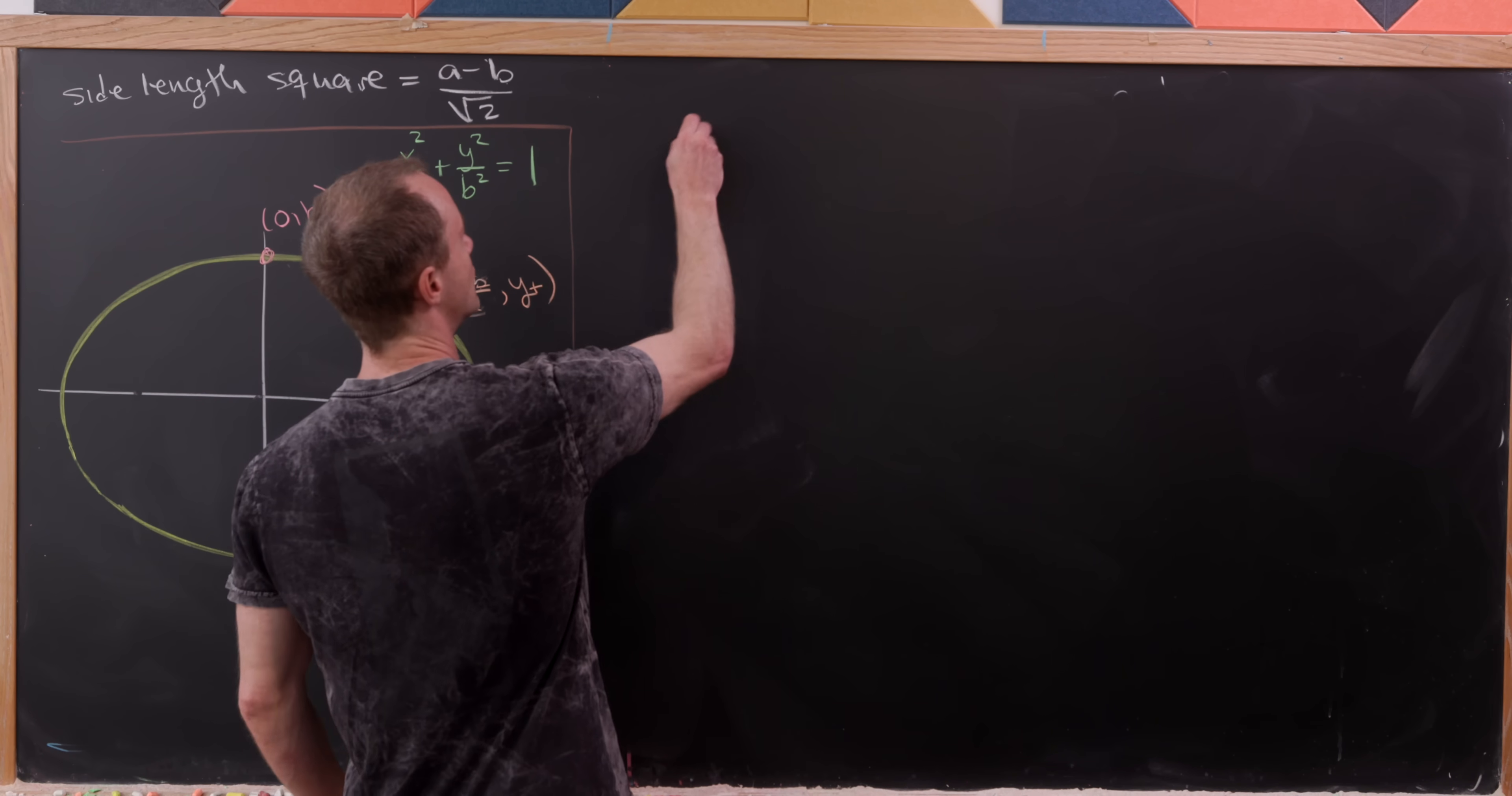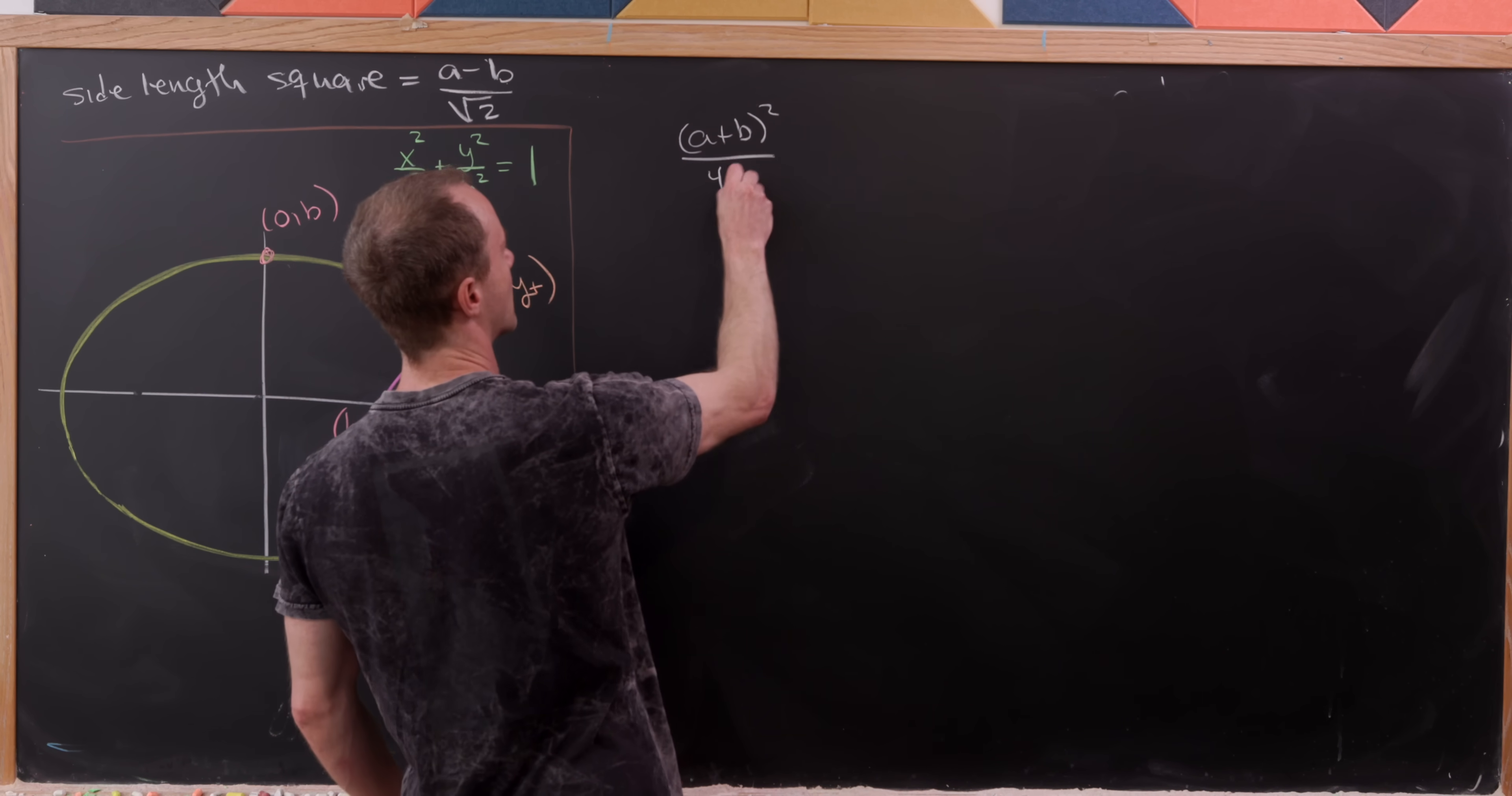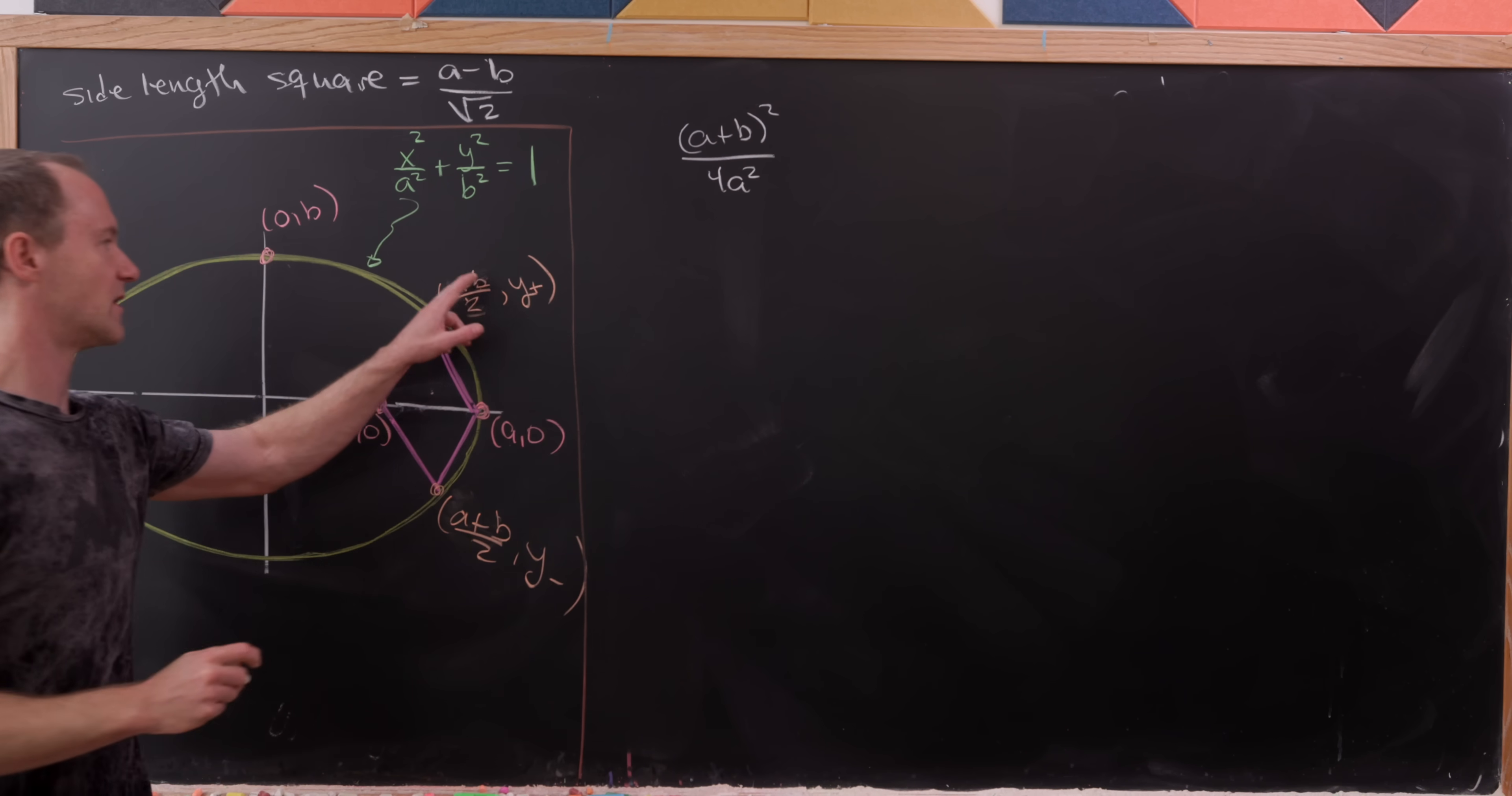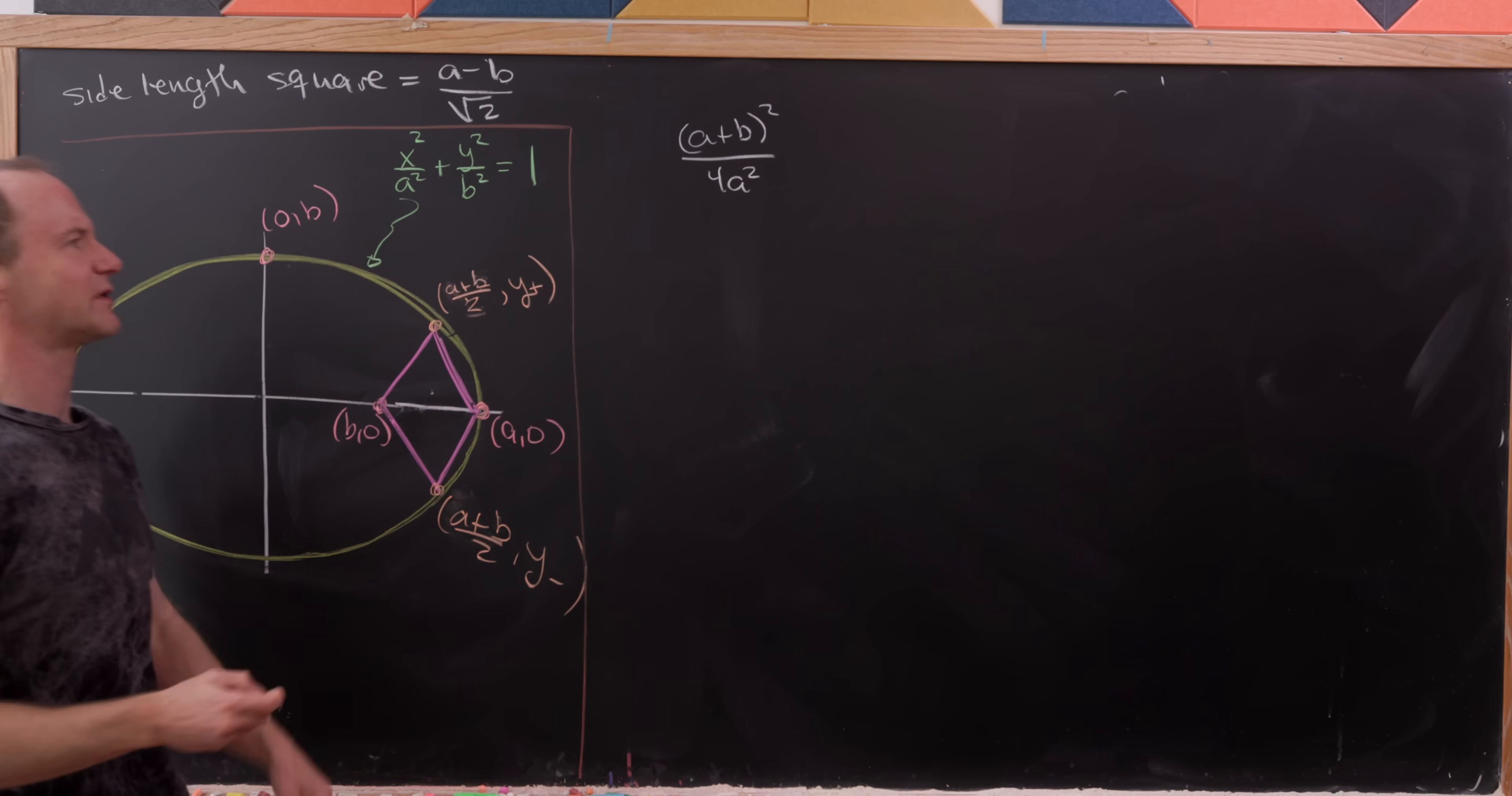We know that (a+b)²/(4a²), so that's what we get from plugging in x = (a+b)/2 and then simplifying a little bit, plus y²/b² must equal 1.